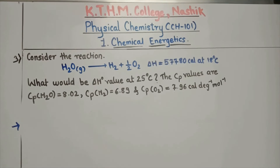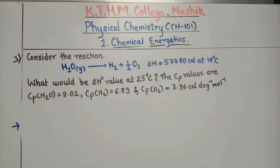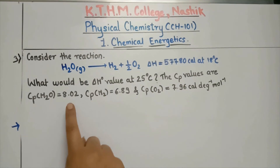The last numerical: consider the reaction H₂O liquid gives H₂ gas plus half O₂ gas. Delta H at 18°C is equal to 57,780 calories. What would be the value of delta H at 25°C? The Cp values are given: Cp of H₂O = 8.02 (liquid), Cp of H₂ = 6.89, and Cp of O₂ = 7.96 calories per degree per mole.